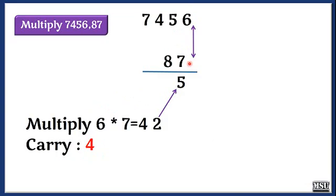So 7456 into 87. First step, we are going to multiply 6 and 7. And here it is 2.